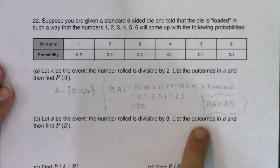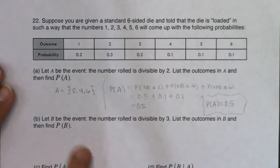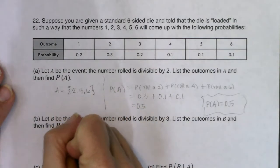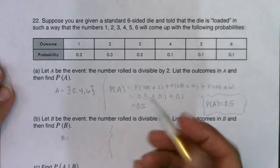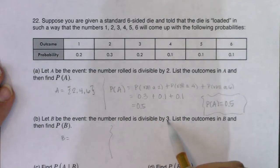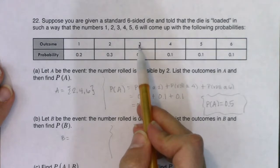So again, two parts. Not only do I need to list the outcomes, I need to find the probability. So let's see what outcomes make their way into event B. So what do I need here? I need to be divisible by 3. Well, those are just outcomes 3 and 6.